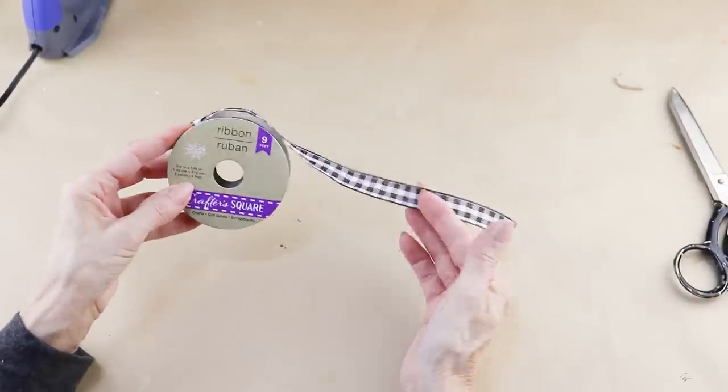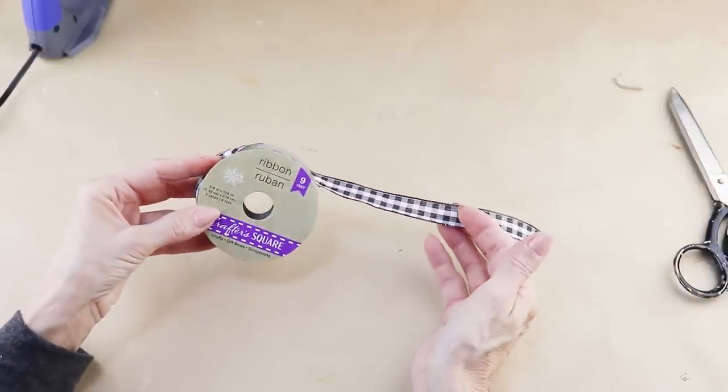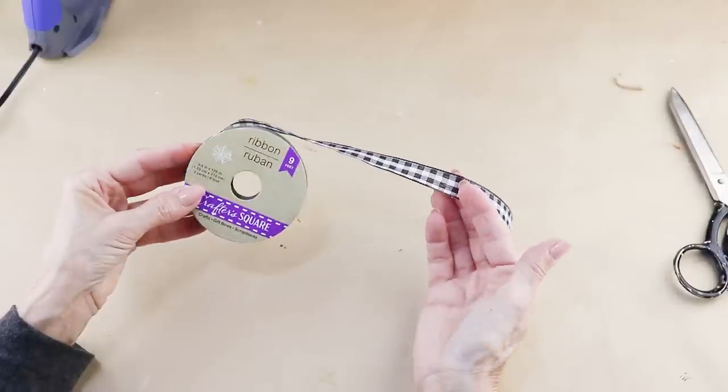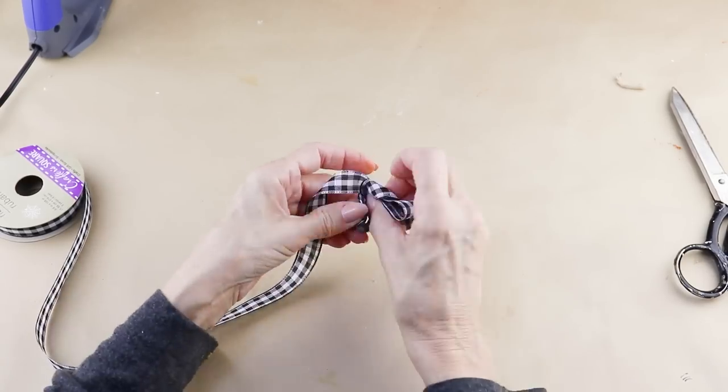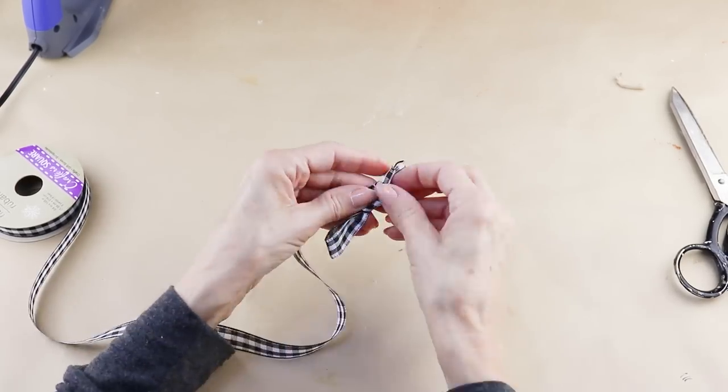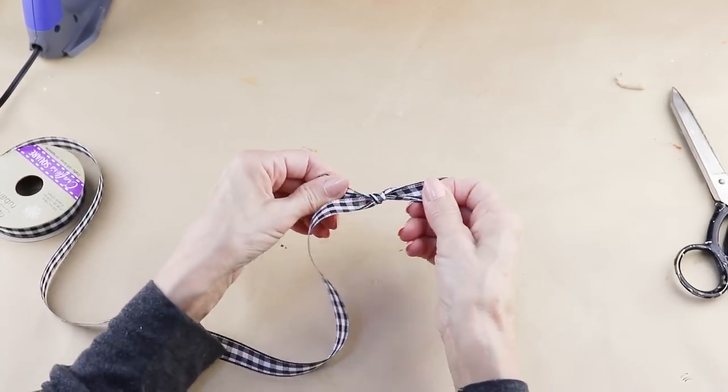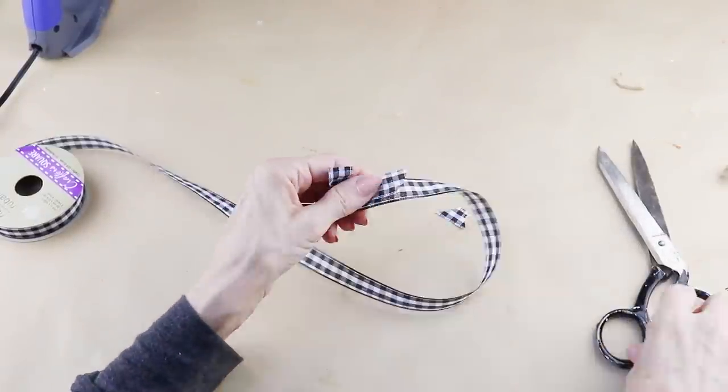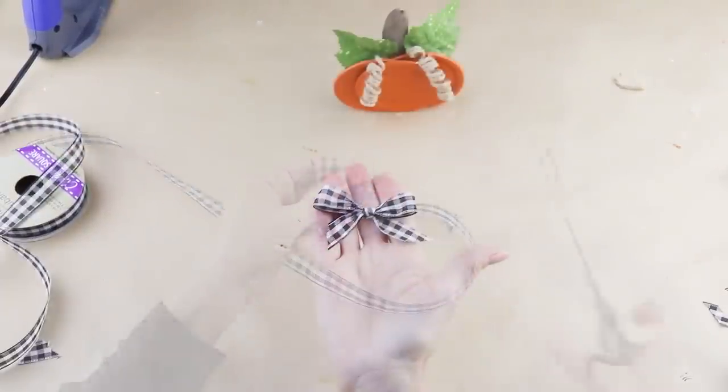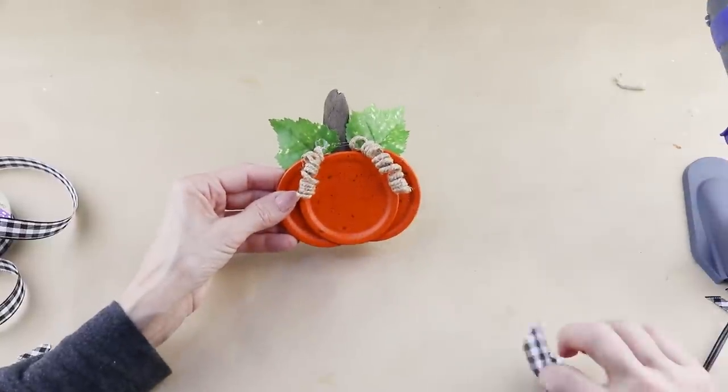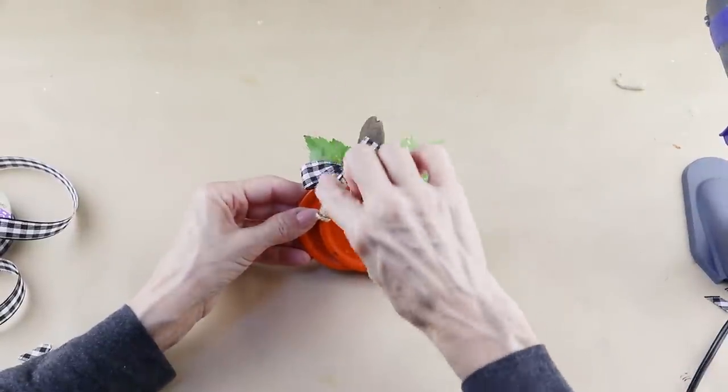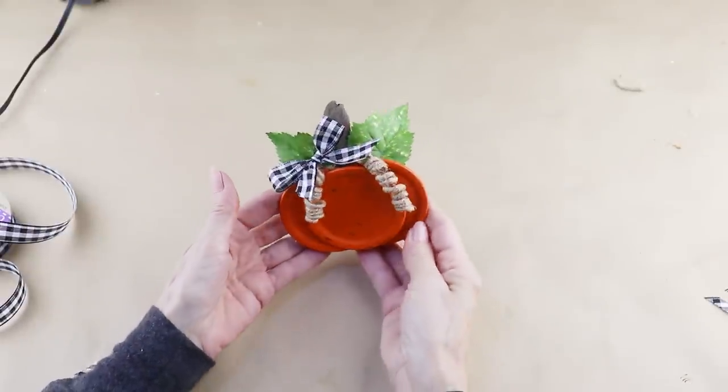To finish up and this step is completely optional I'm using some of the Buffalo check ribbon from the Dollar Tree and making a simple bow. I cut two short tails and then using my glue gun I attached it at an angle on the top. And with that these canning jar lids turned into a perfect pumpkin for my tiered tray.